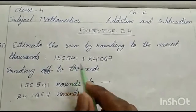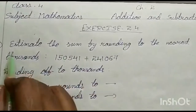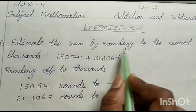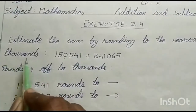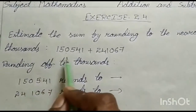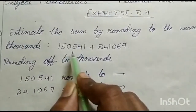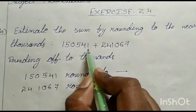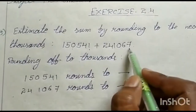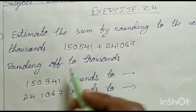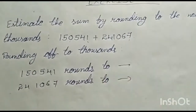Now see here in exercise 2.4, fifth sum: estimate the sum by rounding to the nearest thousands. The given sum is 1,50,541 and 2,41,067. Now, rounding off to the thousand, we have to round these numbers to the nearest thousand.